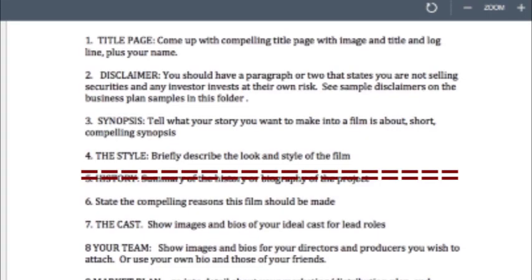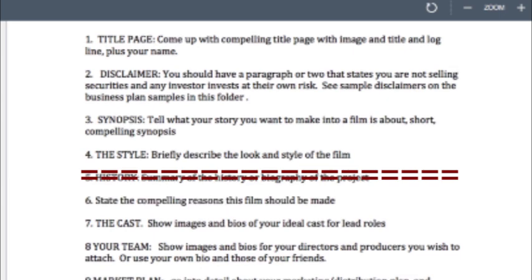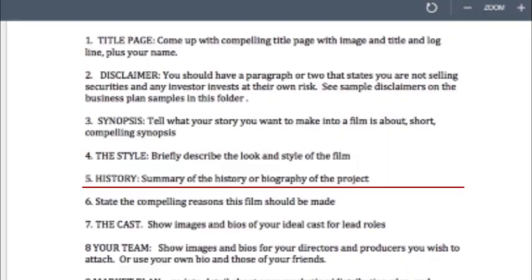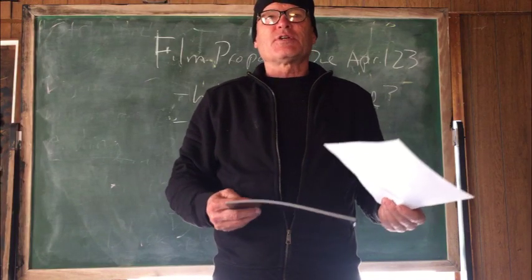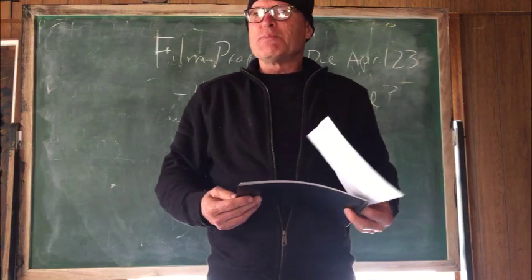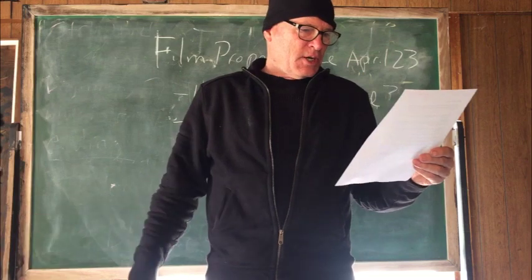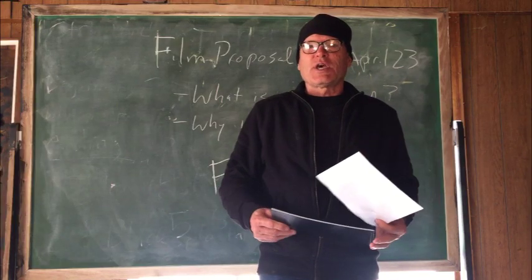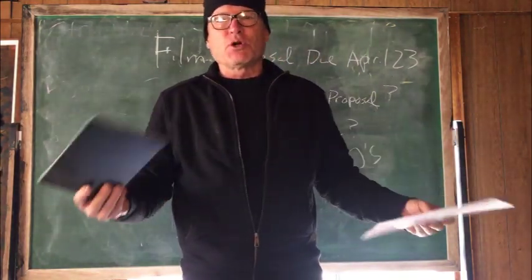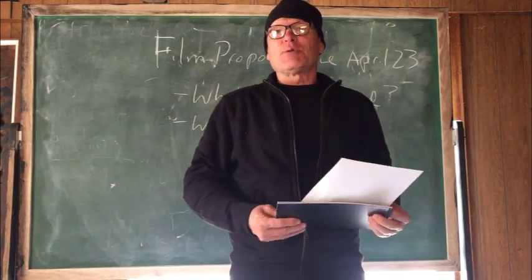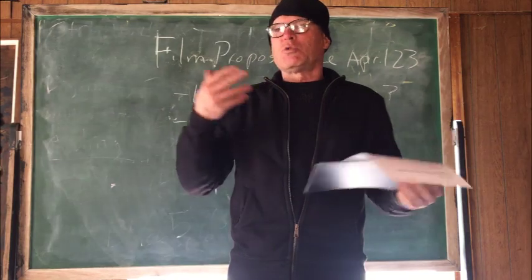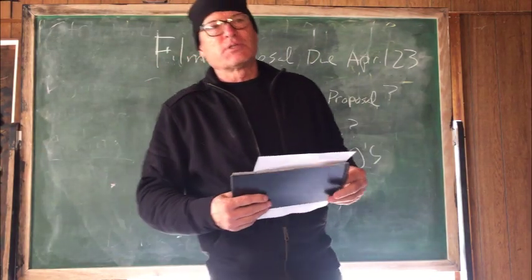Number four, the style — briefly describe the style or look of your film in a short paragraph. Number five, the history — summarize the history or biography of the project, such as: 'This story is based on a book that has millions of readers, therefore there will be millions of people who will buy tickets.' State the compelling reasons this film should be made. Maybe it's a comedy — you could say we've gone through a COVID-19 crisis, America needs to laugh, therefore the opportunity for this comedy to enlighten and entertain audiences will be an amazing opportunity for this film.